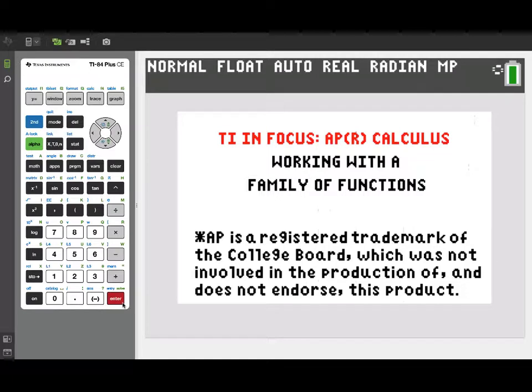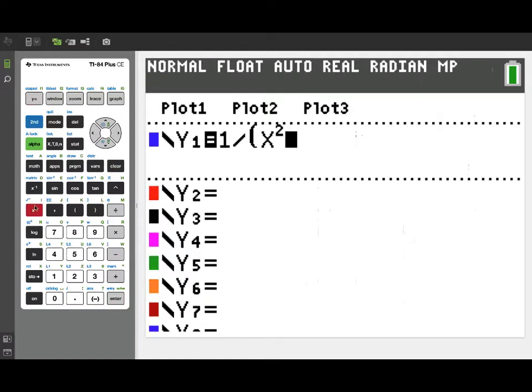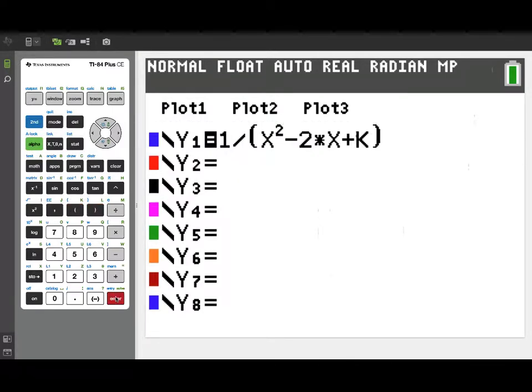This video is part of the TI in Focus AP Calculus series. We're going to be taking a look at using the TI-84 to work with a family of functions. The example we'll use comes from the 2019 BC problem number 5. And this was a rational function, 1 over the quantity x squared minus 2x plus k, where k is a constant that we'll get to change as a parameter and look at different members of the family.